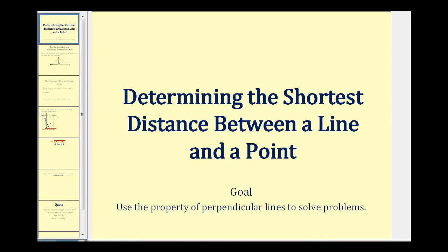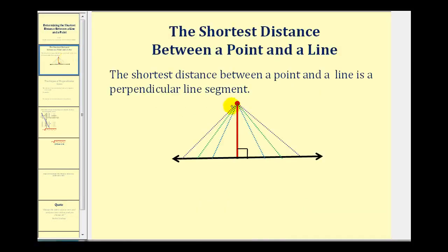Welcome to a video on determining the shortest distance between a line and a point. If we're trying to determine the shortest distance from this red point to this black line, we can see visually it's going to be a segment that's perpendicular to the black line. If the segment is not perpendicular, it would not be the shortest distance. So the shortest distance between a point and a line is a perpendicular line segment.